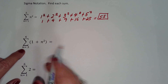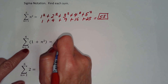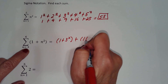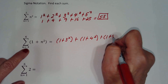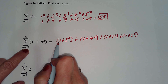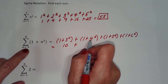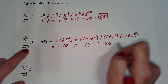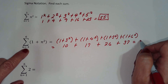Let's look at the next example. We're going to start at 3 and go to 6. Substituting in for n: 1 plus 3 squared, plus 1 plus 4 squared, plus 1 plus 5 squared, plus 1 plus 6 squared. That gives us 1 plus 9 equals 10, plus 1 plus 16 equals 17, plus 1 plus 25 equals 26, plus 1 plus 36 equals 37. Adding those together we get 90.